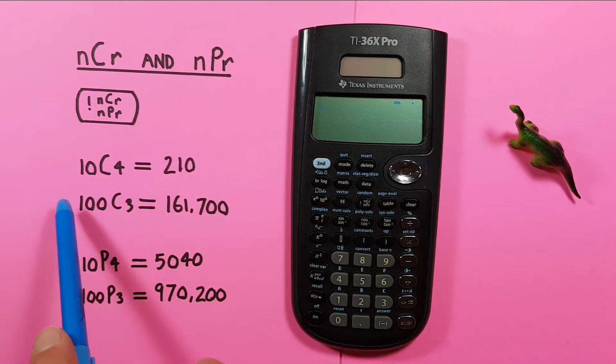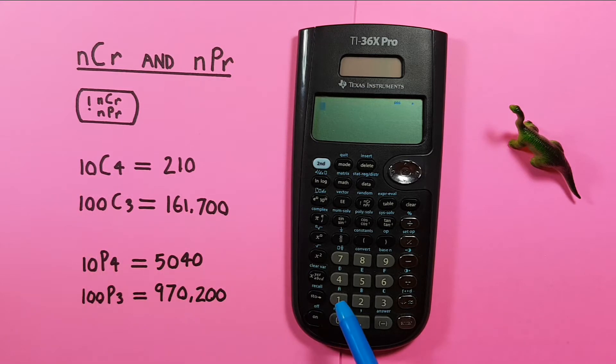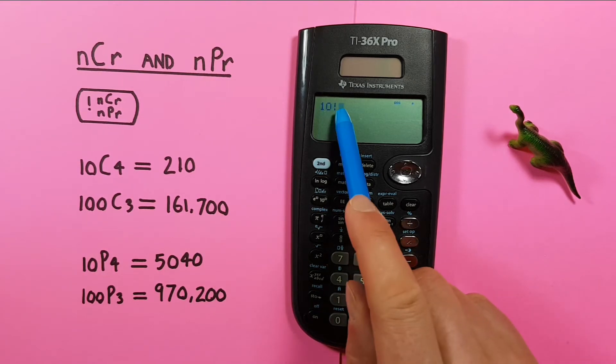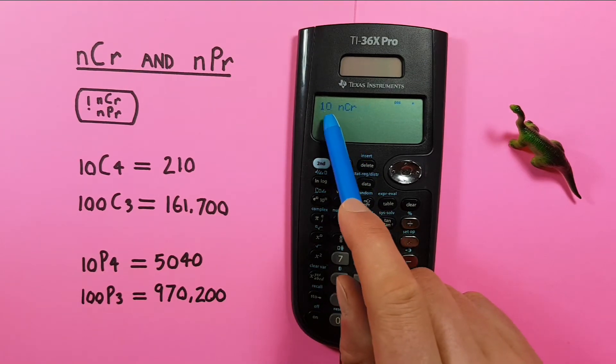like for example choosing 4 from a set of 10, we start by entering the 10 and then hit the factorial combination permutation key once to get the factorial and then a second time to get the NCR which represents combinations.